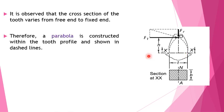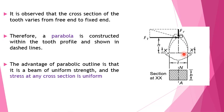For the purpose of analysis, a parabola is constructed inside the tooth profile, shown by dashed lines, which is tangent to the base of the tooth at section XX. This parabola represents a beam of uniform strength, meaning if the teeth are shaped like a parabola, they will have the same stress at all sections. The height of this parabolic beam is taken as h, with Ft acting at its end, and Fr as the compressive force.